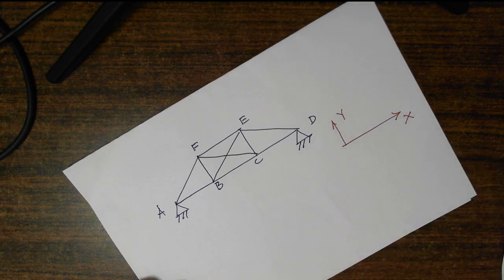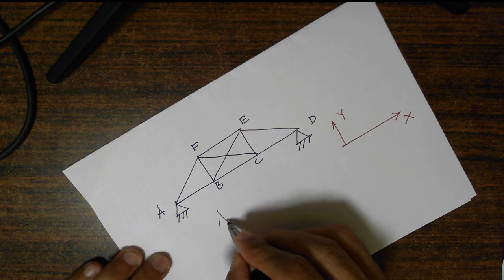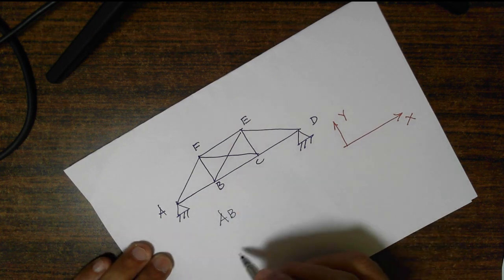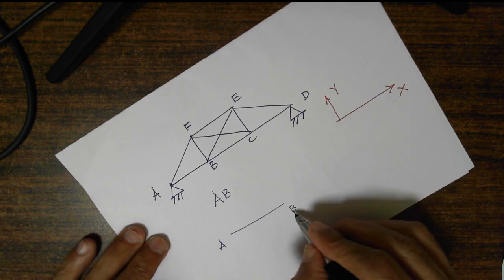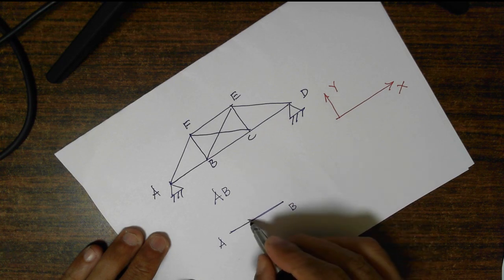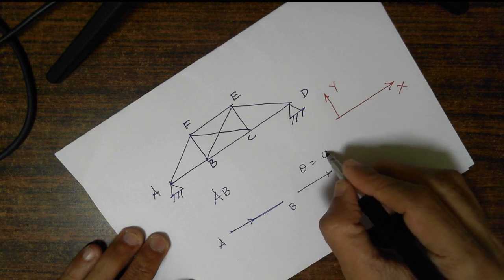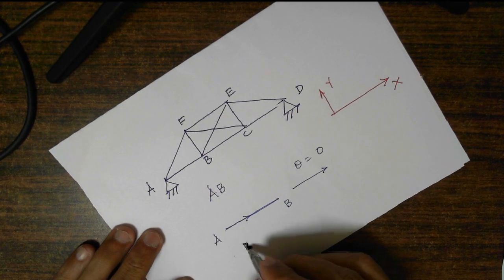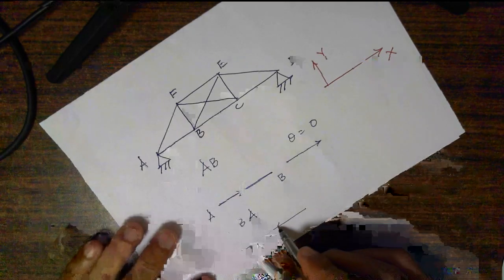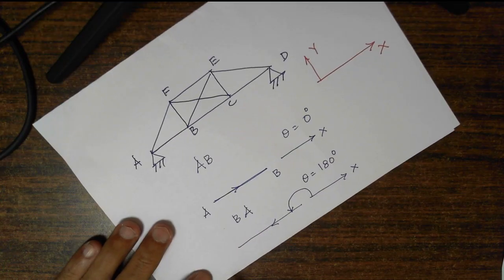If I want to write the stiffness matrix for member AB, I know member AB goes from A to B. The naming of the member is very important. For member AB the angle θ equals zero since it aligns with the global x-direction. But if I say member BA, then member BA goes in the opposite direction, and θ — the angle measured with respect to the global x-direction in anti-clockwise fashion — becomes 180 degrees. It will be very hard to remember these things in actual practice.